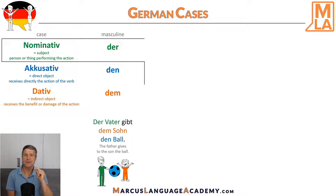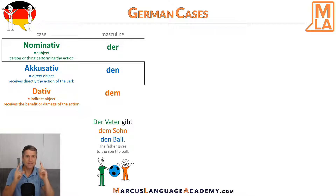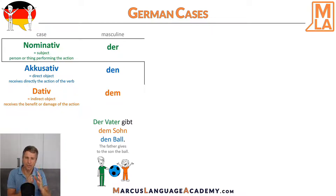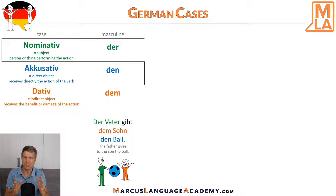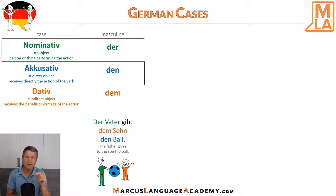Der Vater gibt dem Sohn den Ball. The literal word-for-word translation is: the father gives to the son the ball. Der Vater is the subject and therefore green because it's in Nominativ — the article doesn't change and remains 'der'. The ball is our direct object in Akkusativ and is blue — the article 'der' becomes 'den'. The son receives the benefit of the action, so it's in the dative case as an indirect object and is orange — the article 'der' becomes 'dem'.